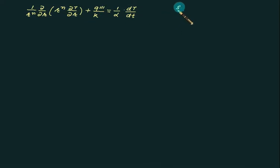For slab, n value equals 0 and you have to replace r by x. In case of cylinder, n equals 1, and for sphere you have to write n equals 2.